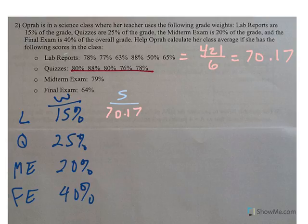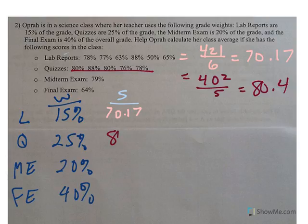For the quizzes, I'm going to add the five quizzes together. I get 402, and I divide by five. She averaged 80.4 on the quizzes.